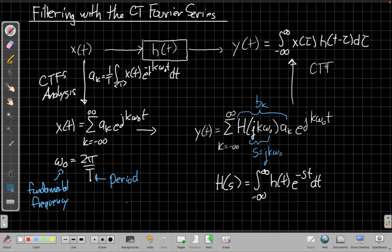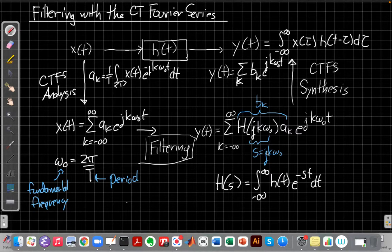And so this would be the CT Fourier series synthesis, where we're saying that y(t) is the sum of the b_k e^(jk omega_0 t). So the big payoff in this new roadmap is that while it looks like a complicated process, I've avoided this convolution and this filtering has, I've gone from convolving in time to just multiplying in frequency.